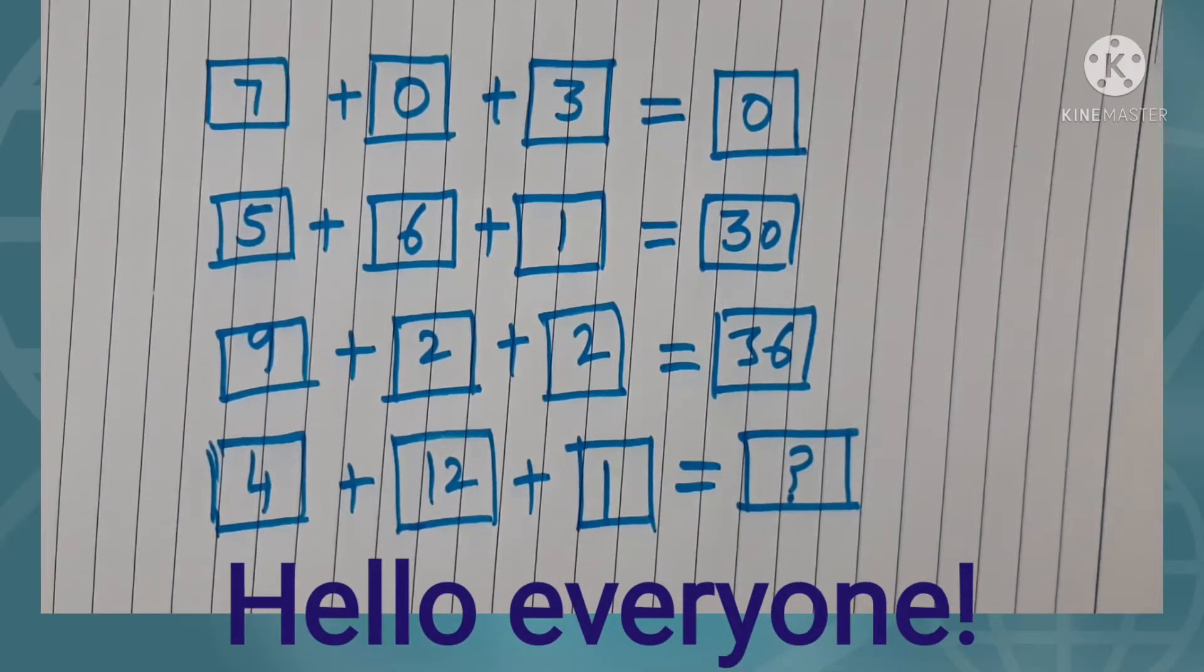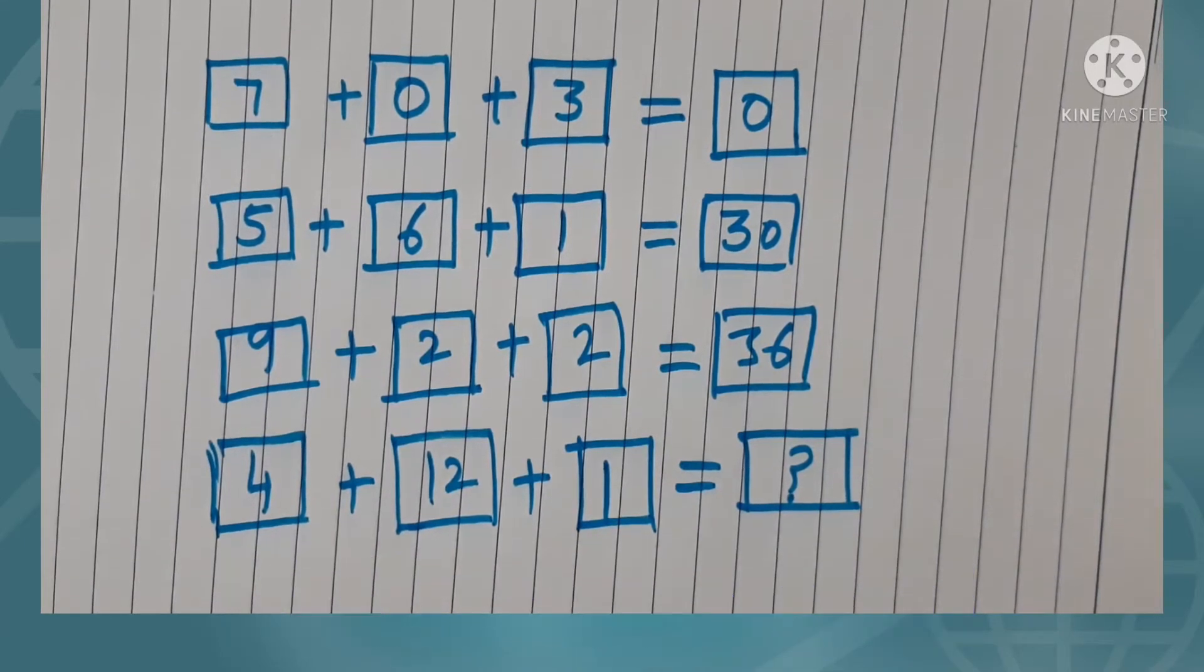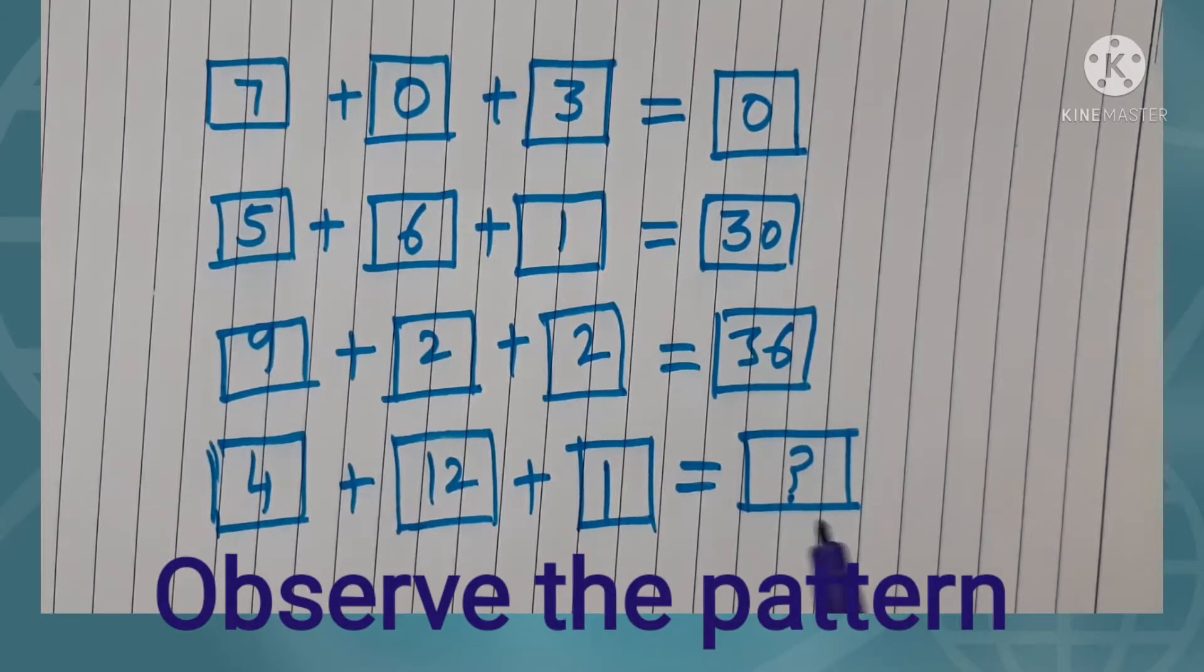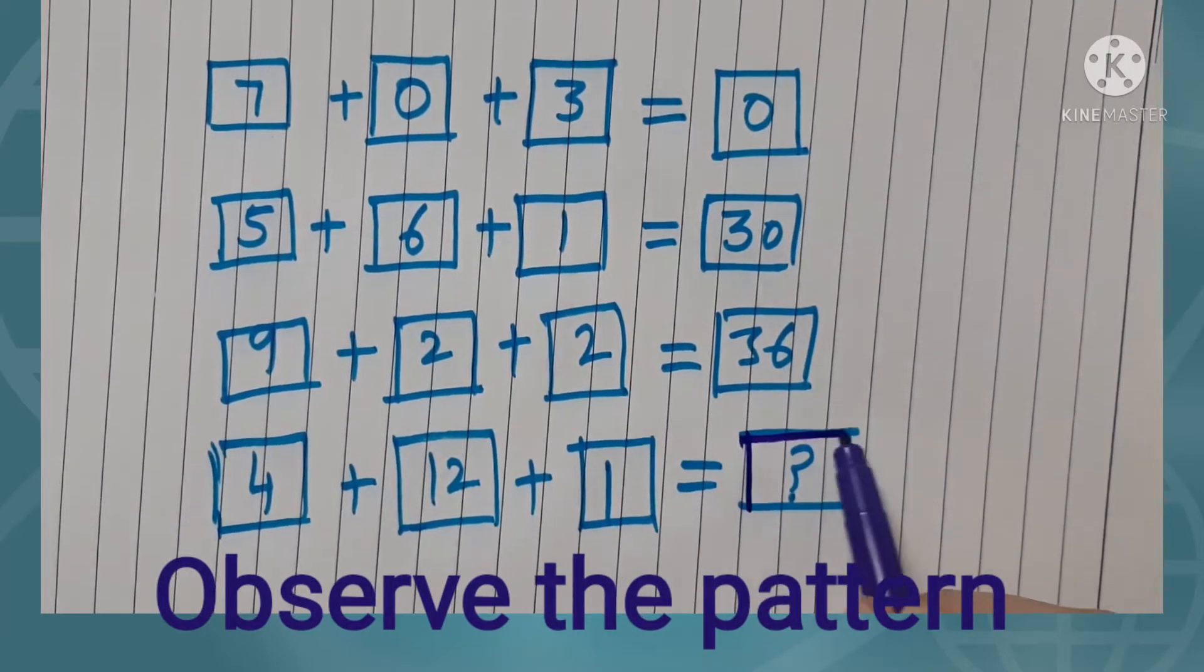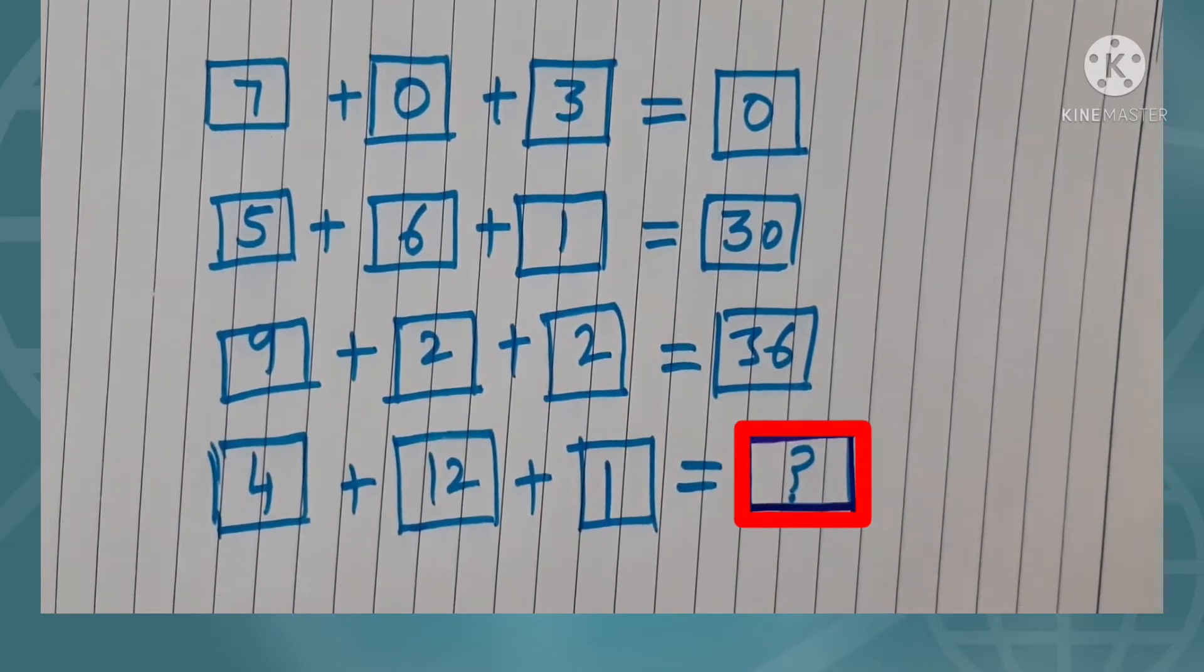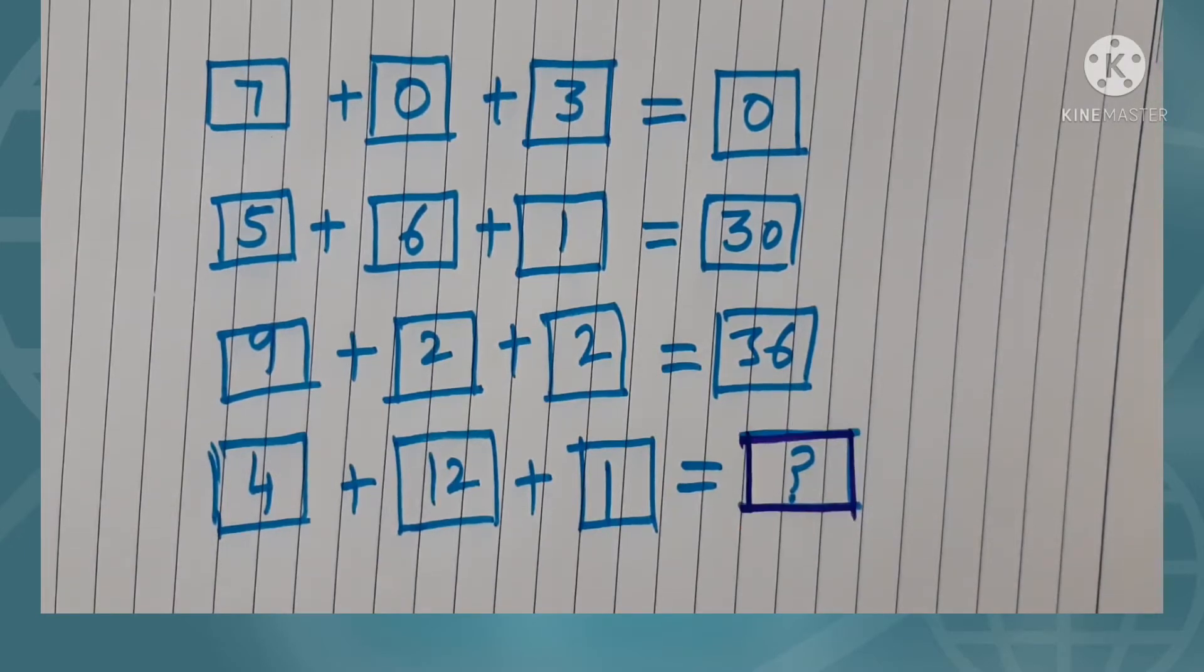Hello everyone, are you ready to solve today's puzzle? It's an interesting maths puzzle and we need to observe the pattern and find what will come in this box. 7 plus 0 plus 3 is 0. 5 plus 6 plus 1 is 30.